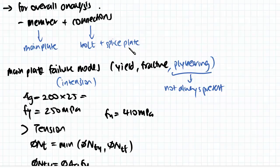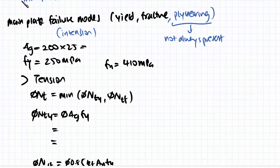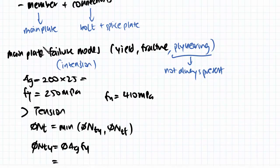So firstly we can look at the failure modes of the main plate. When we're looking at this example, all we're trying to determine is to find all the failure modes, find the capacity of each failure mode, and find which failure mode has the lowest capacity. Then we can find out the capacity of our whole connection. Alright, so we're going to start by looking at the main plate and the failure modes.